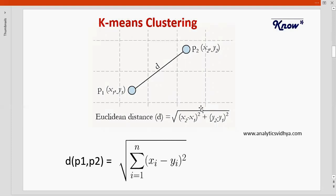This formula can be extrapolated to an n-dimensional space as well. Once we have calculated this distance we'll identify the nearest centroid point and move that data point to that group.